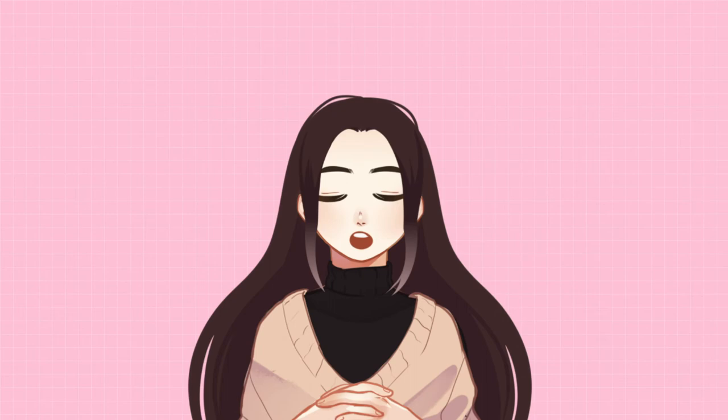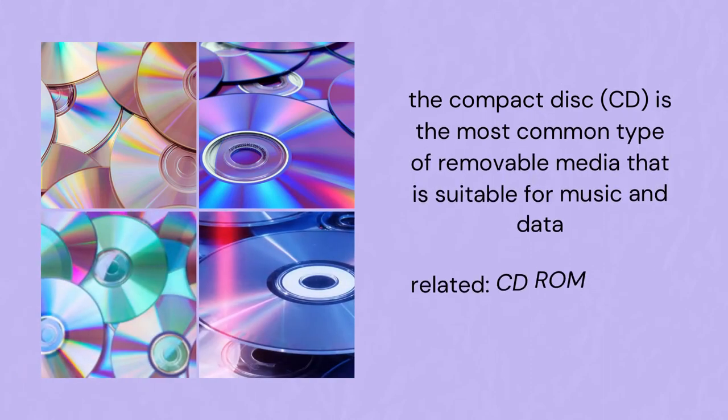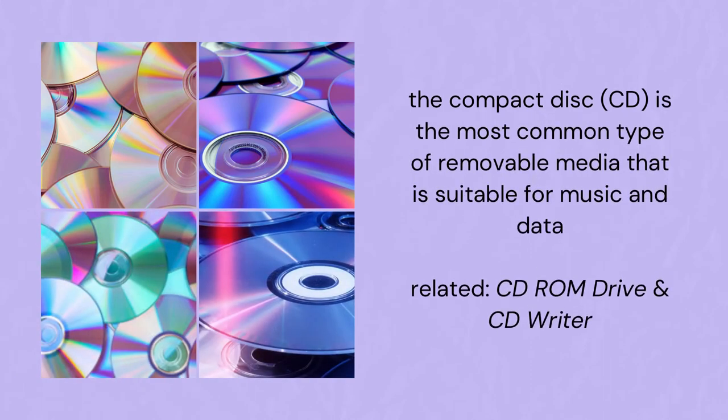One of the most common examples of removable media would be the compact disk or CD. This is the most common type of removable media. It is suitable for music and data. We have the CD-ROM drive and the CD-Writer. The difference is that the ROM drive can only read data from the CD, while the writer can read and write data.